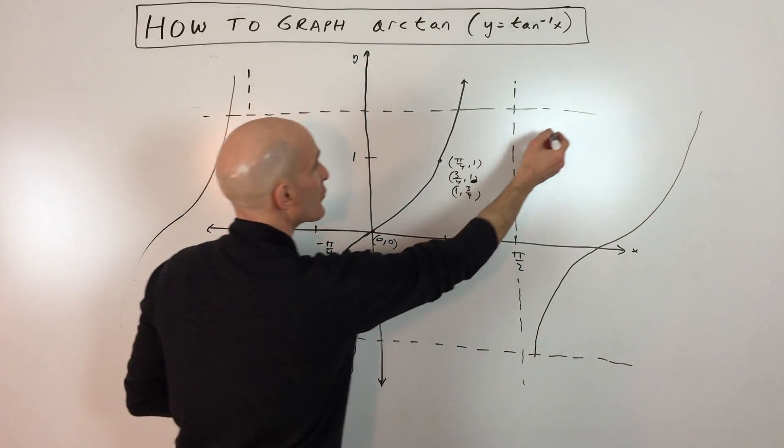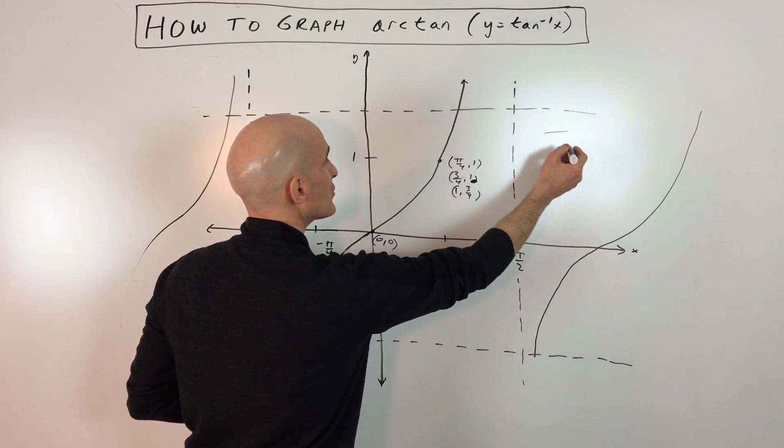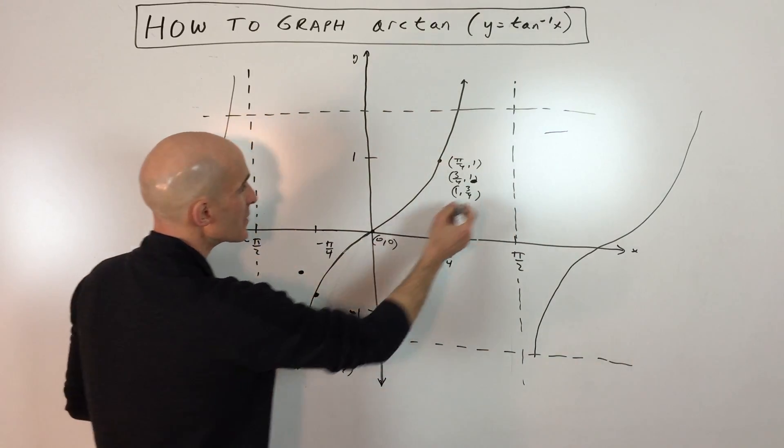So now what we're going to do is we're going to graph our tangent inverse graph. It's going to look something like, let's see here, it's going to look like this.